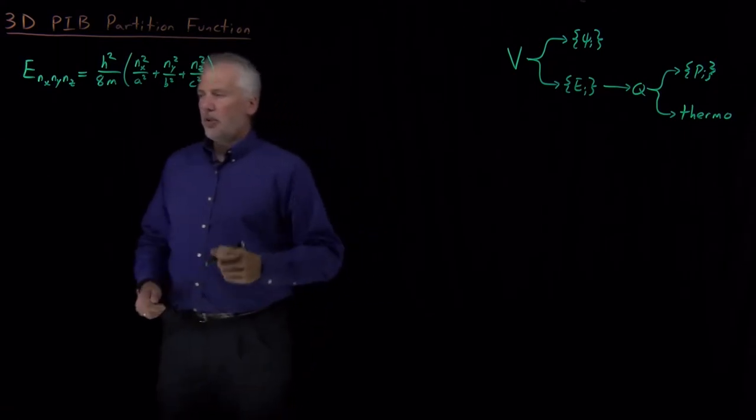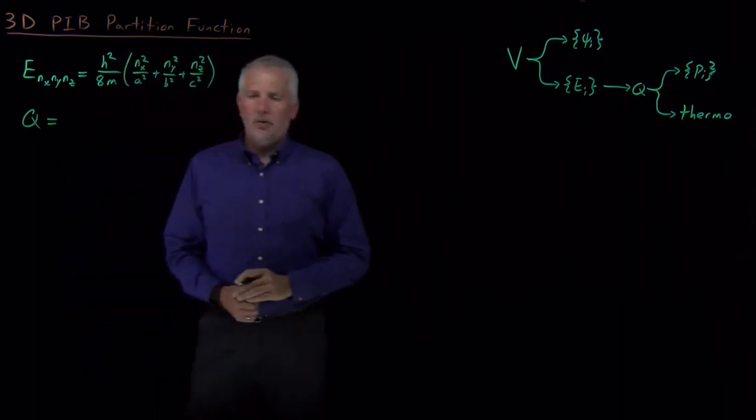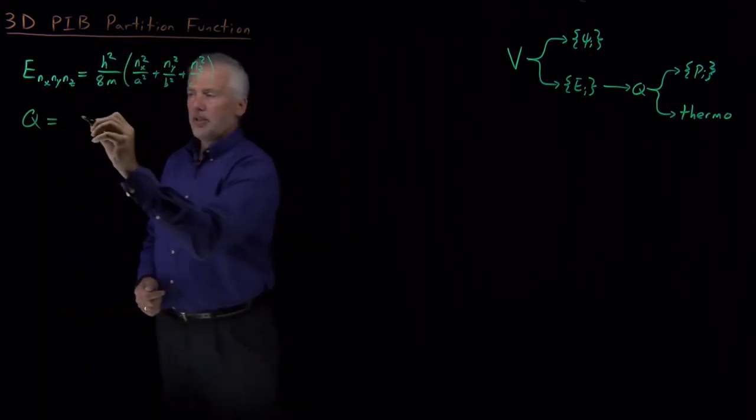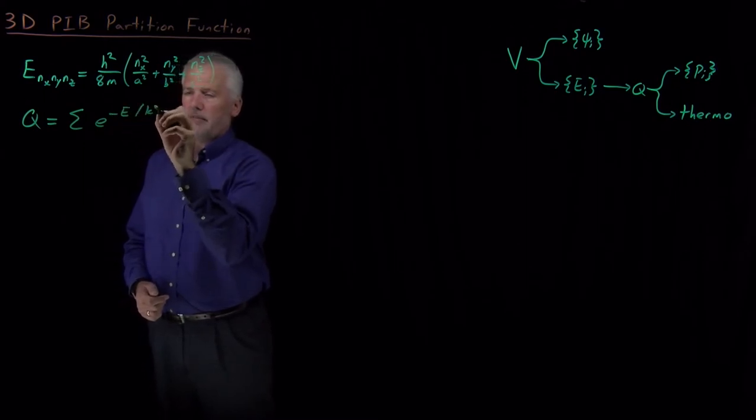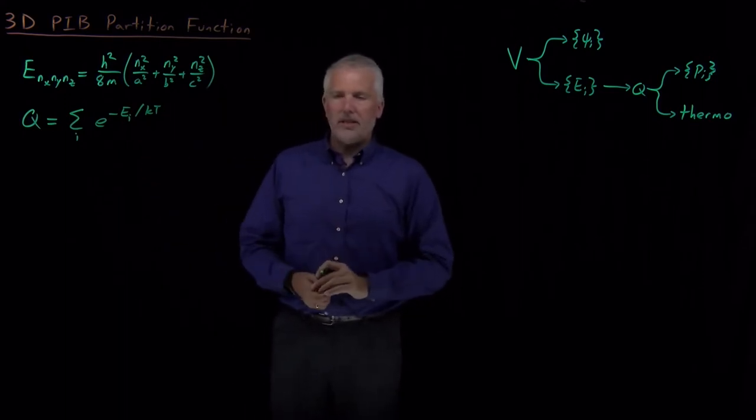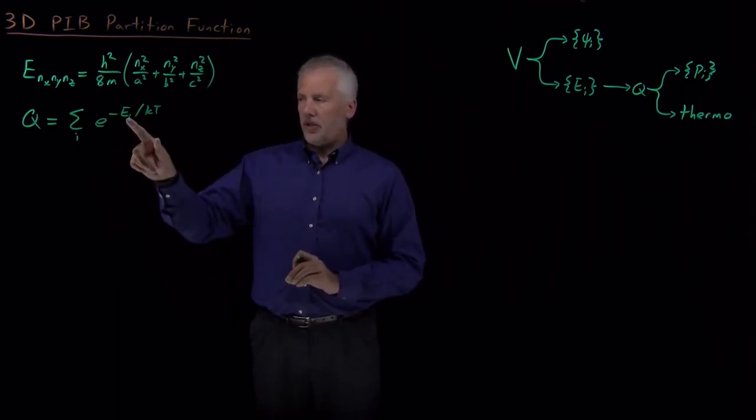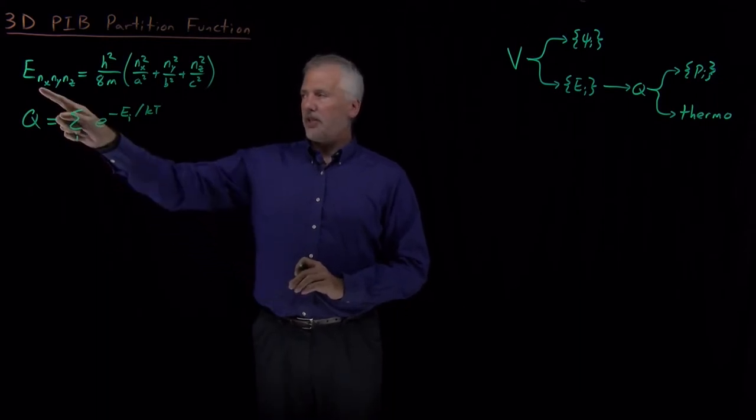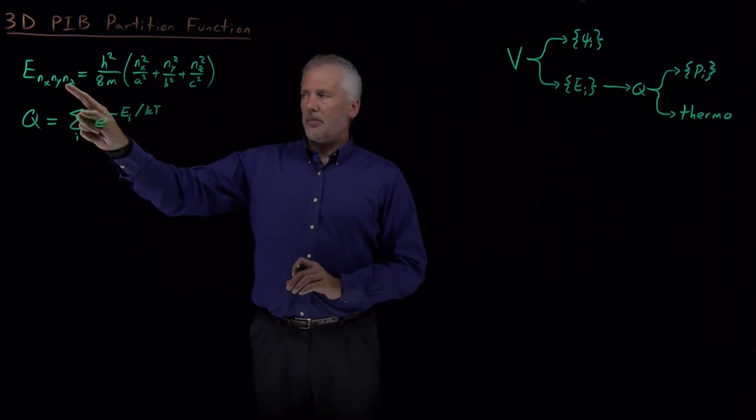So if we'd like to know what is the partition function for any problem, it's the sum of the Boltzmann factors, e to the minus energies over kT, summed up over all the different states that the system can have. So in this case, our states are described by these constants, n sub x, n sub y, n sub z.